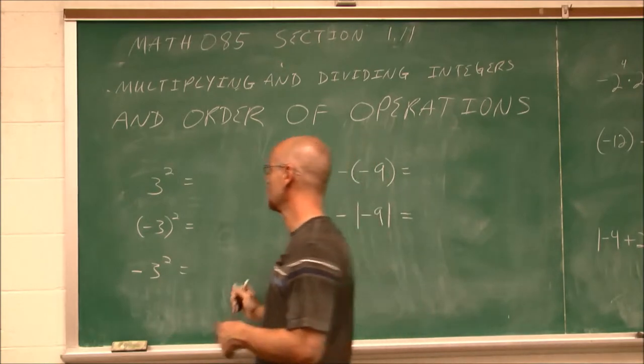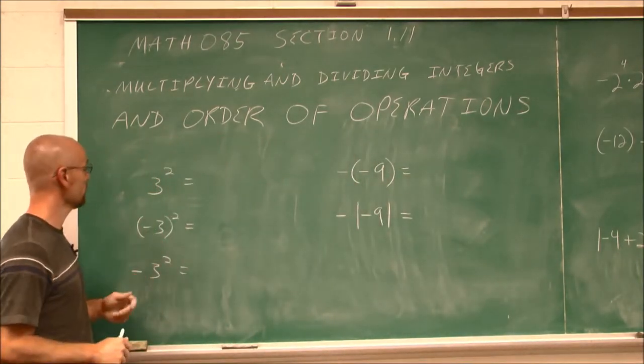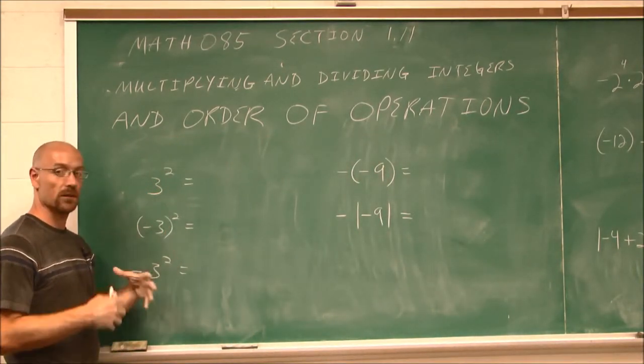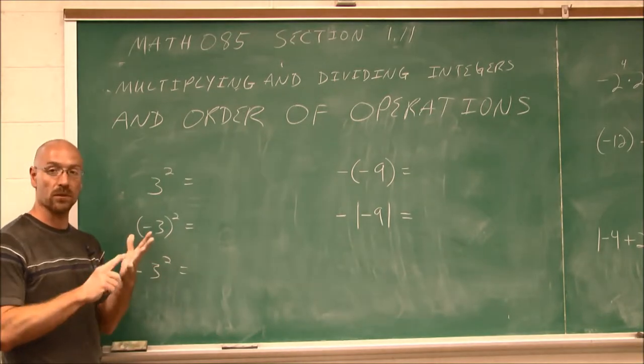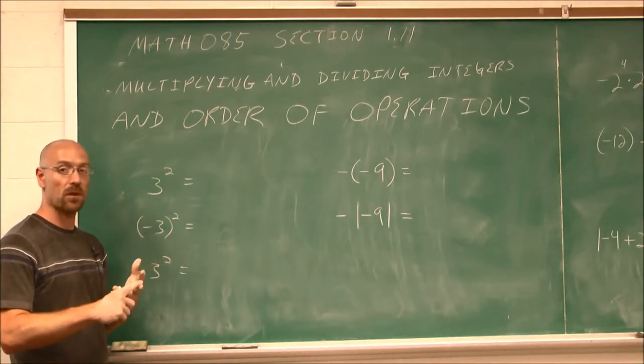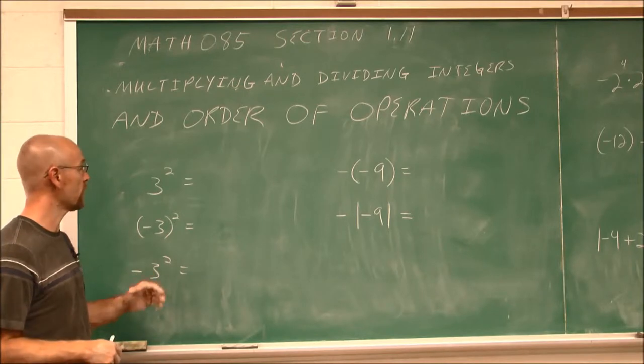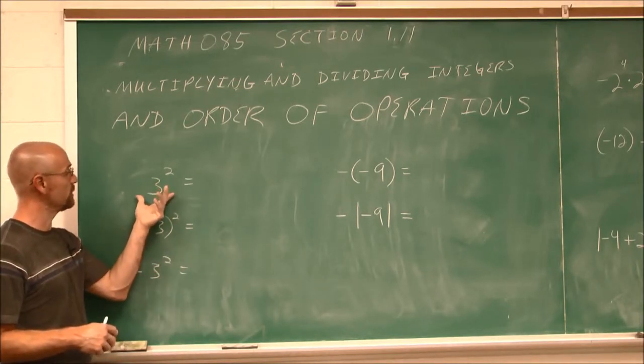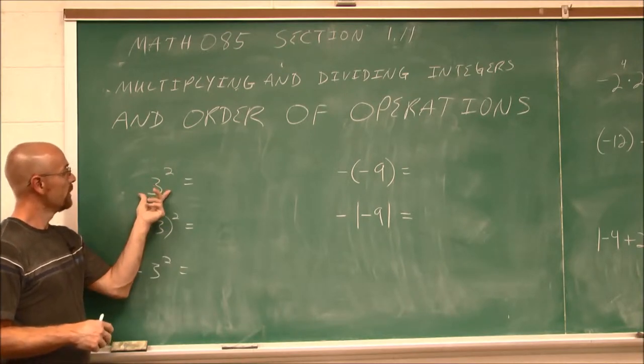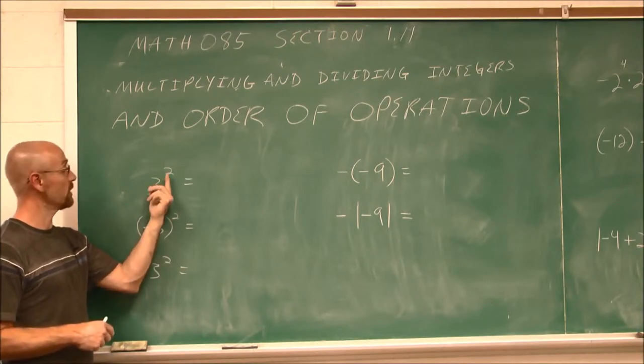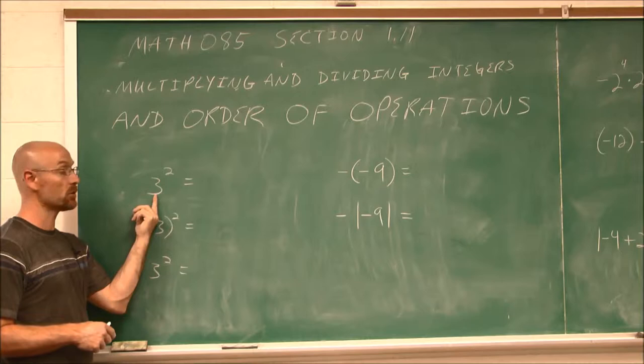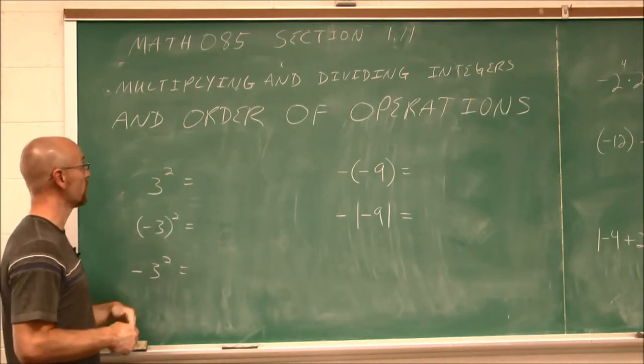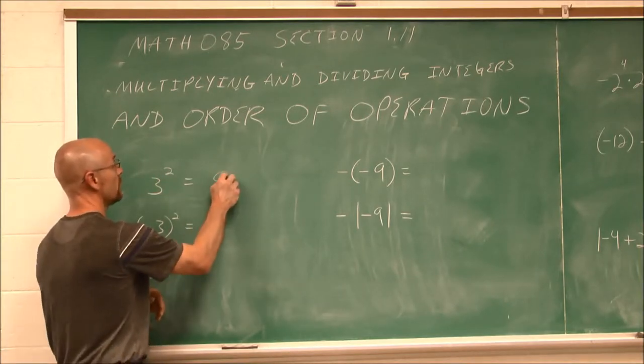In the previous video, we saw some similar to this. What we have to recall is order of operations applies. We do parentheses, exponents, multiplication, division, addition, and subtraction in a left to right, top to bottom order. If we look at these, we only have one term here. If we look at this, the exponent applies to the number it's adjacent to: 3 squared. Well, that's 3 times 3, which is 9.